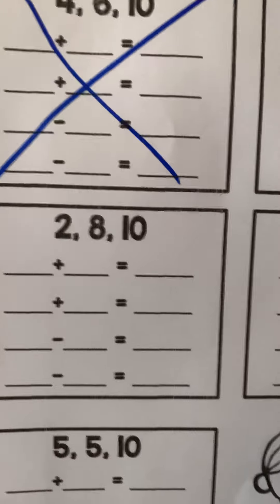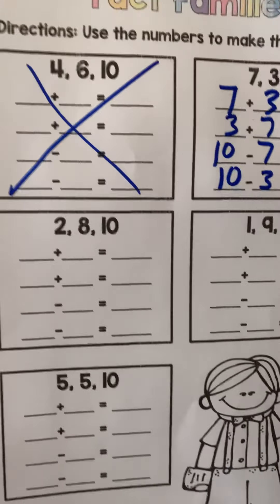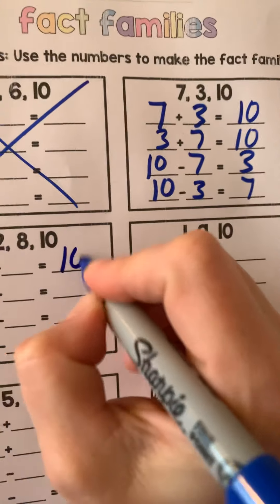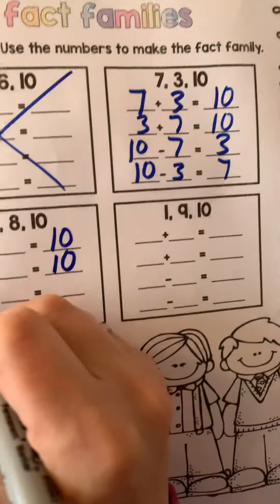Okay, let's try 2, 8, and 10. So our addition ends with the biggest number. The biggest number is what, Kaylee? 10, 10. Subtraction starts with the biggest number. What was that biggest number again? 10, 10. So we use that.